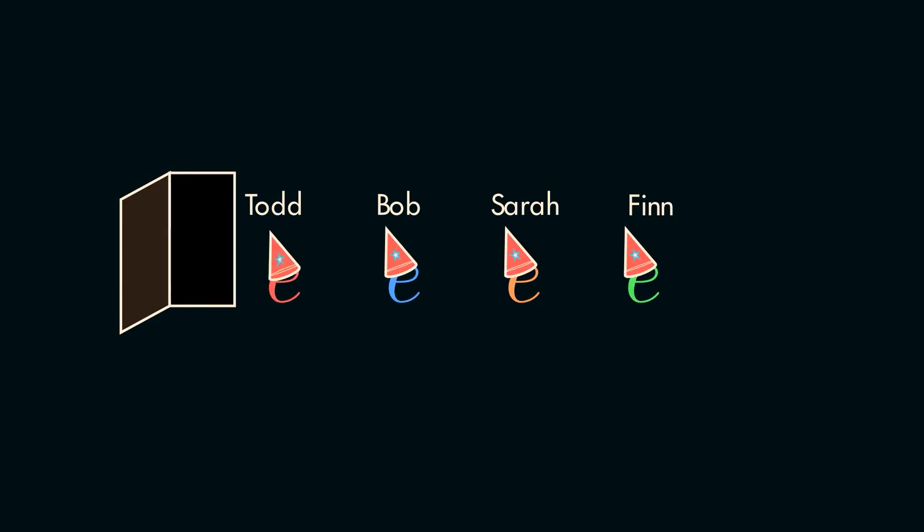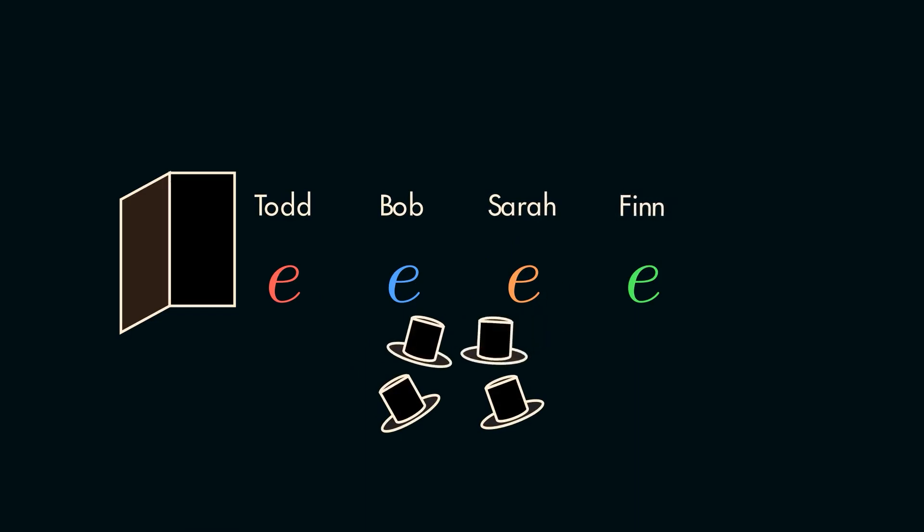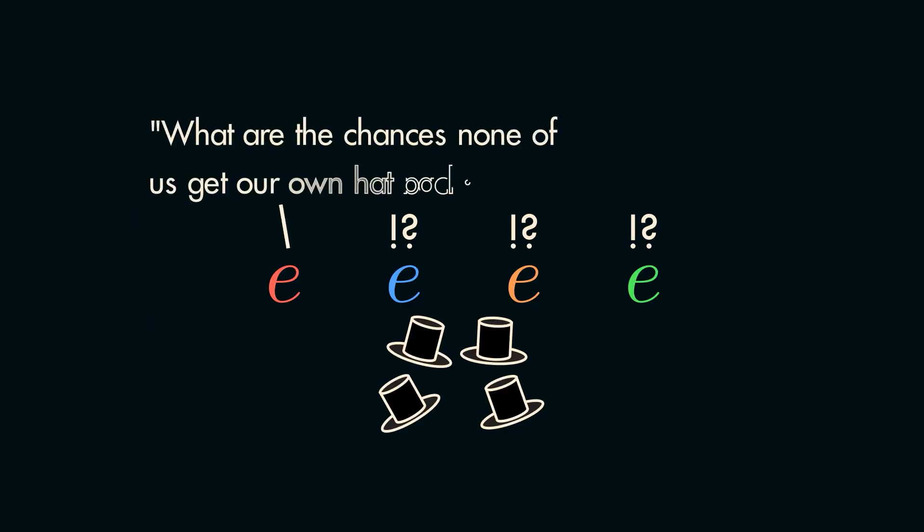Unfortunately, as Todd, Bob, Sarah, and Finn put their hats away, they failed to realize said hats were identical to each other. Only realizing their mistake after a particularly raucous party, Todd is the first to say, well, if we pass them out randomly, a few of us should get the right hat. I mean, what are the chances none of us get our own hat back?